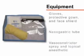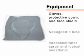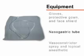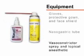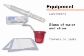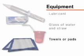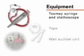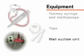Begin by gathering the equipment you will need. This will include gloves, a protective gown, and face shield, an appropriately sized nasogastric tube, vasoconstrictor spray, and a topical anesthetic such as benzocaine or lidocaine solution with an atomizer. Obtain a lubricant, a glass of water with a straw, towels or blue pads, a 60cc catheter tip syringe, a stethoscope for tube confirmation, tape, and a wall suction setup.